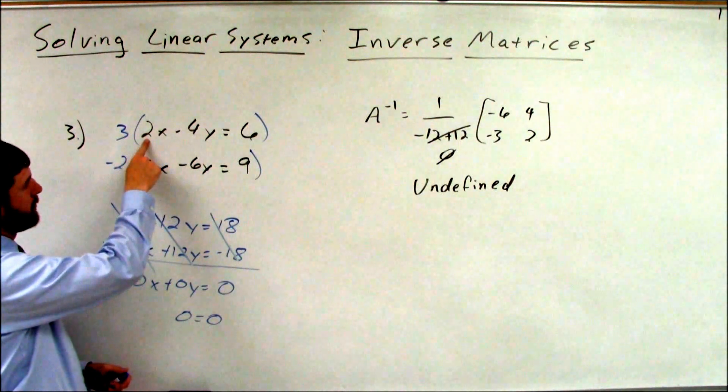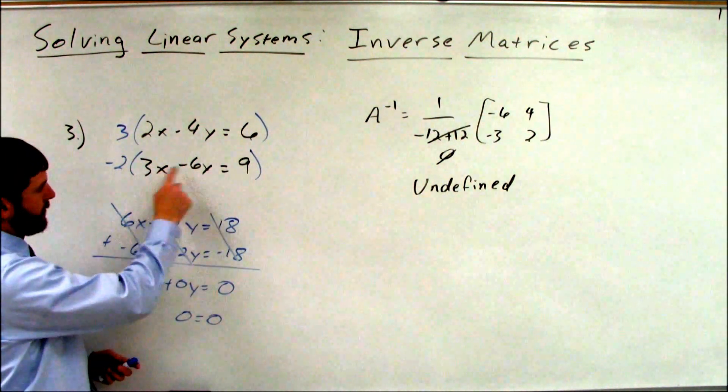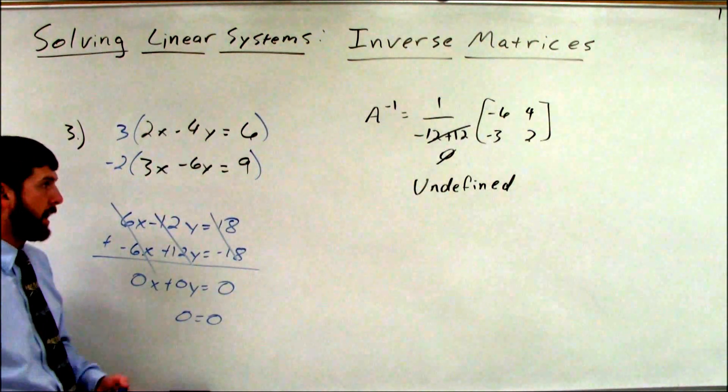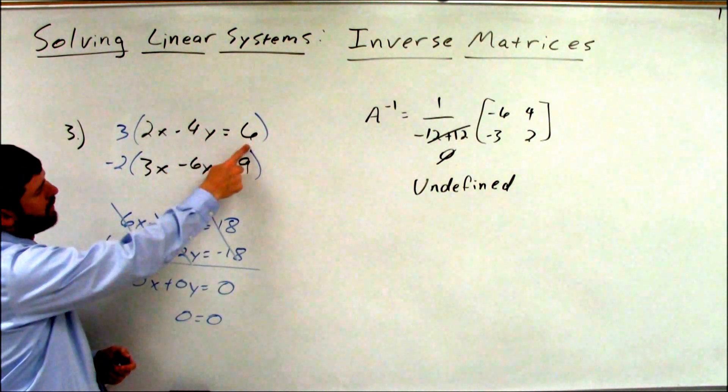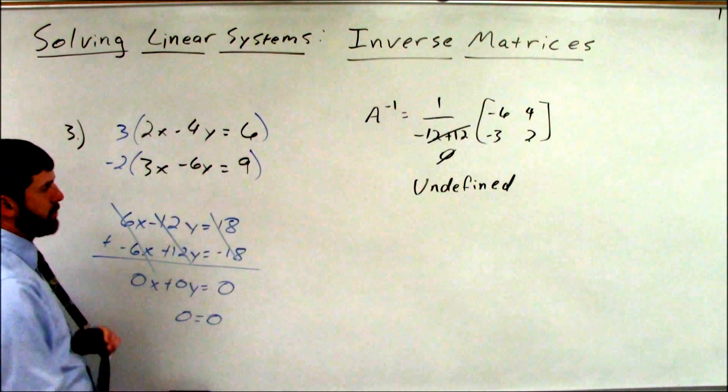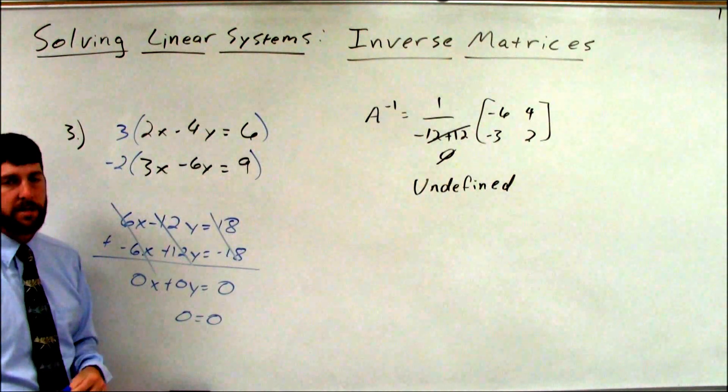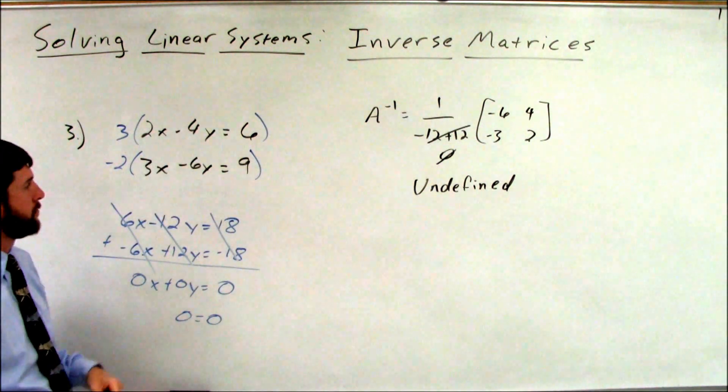What's my slope? Negative 2 over negative 4 is 1 half. Negative 3 over negative 6 is 1 half. So same slopes. 6 divided by negative 4 is negative 3 halves. 9 divided by negative 6 is negative 3 halves. Same y-intercept, so these are the same line.